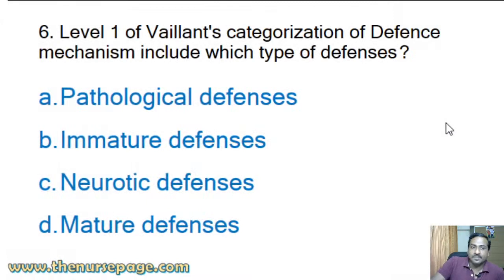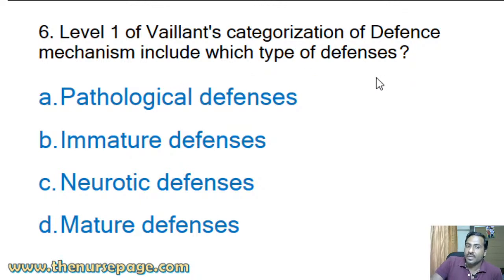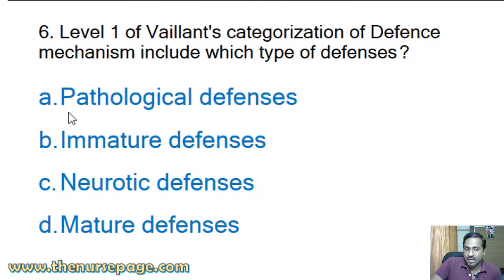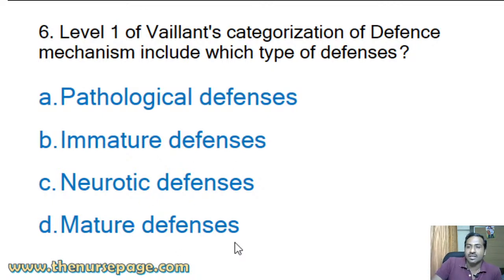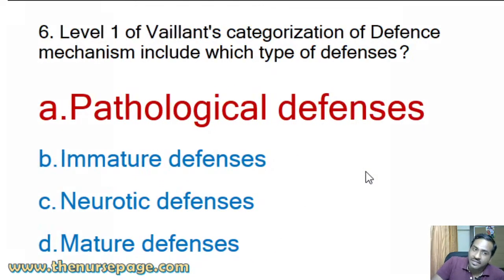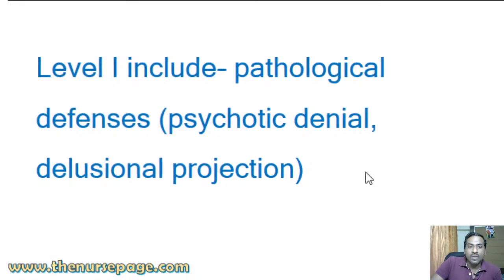Next question: 'Level one of Weyland's categorization of defense mechanisms includes which type of defenses?' Options: pathological defenses, immature defenses, neurotic defenses, mature defenses. The answer is pathological defenses — level one includes pathological defenses like psychotic denial, denial, delusional projection, and distortion.